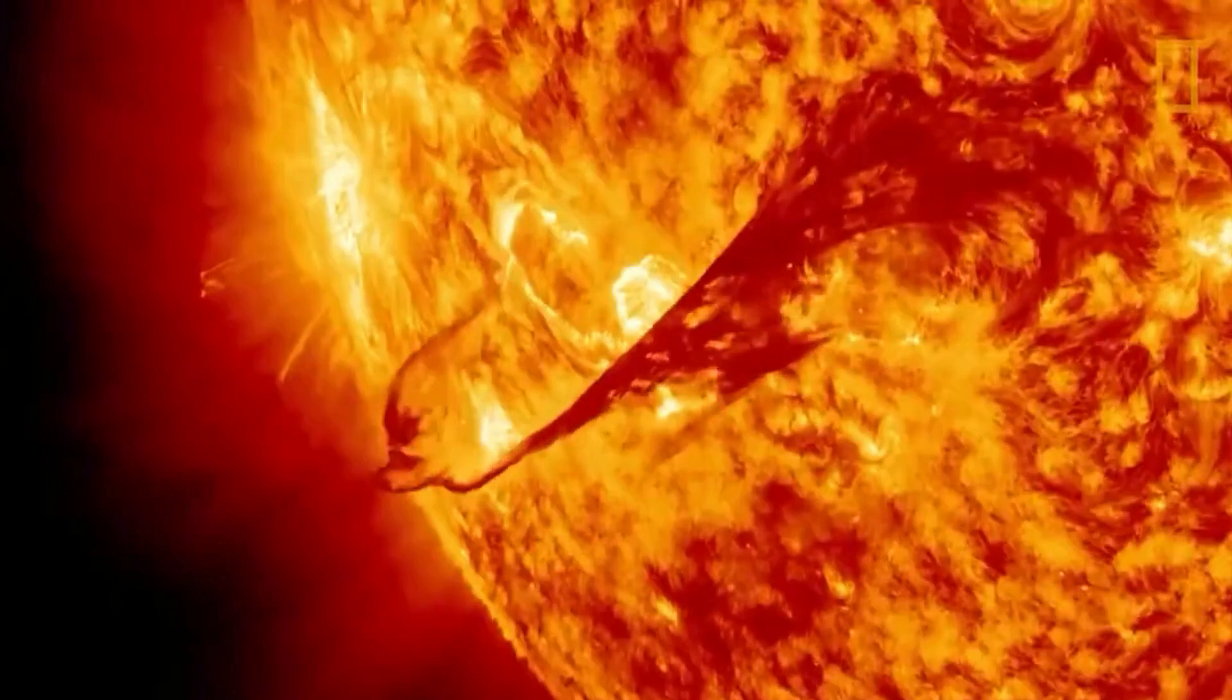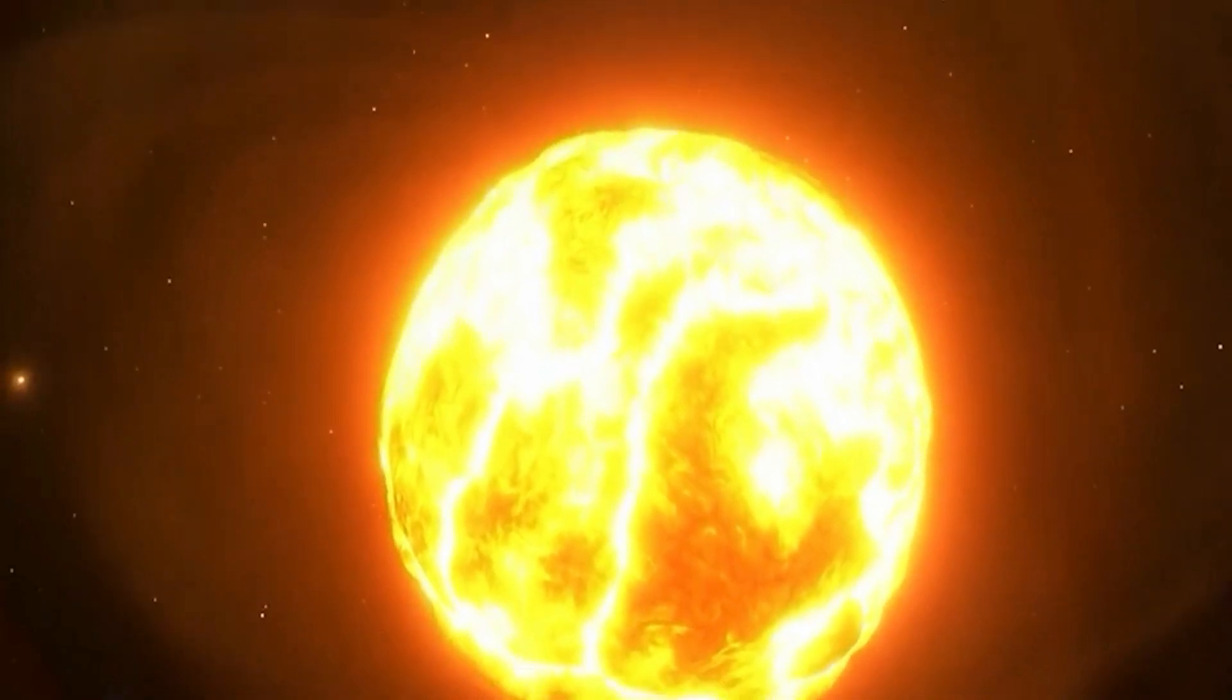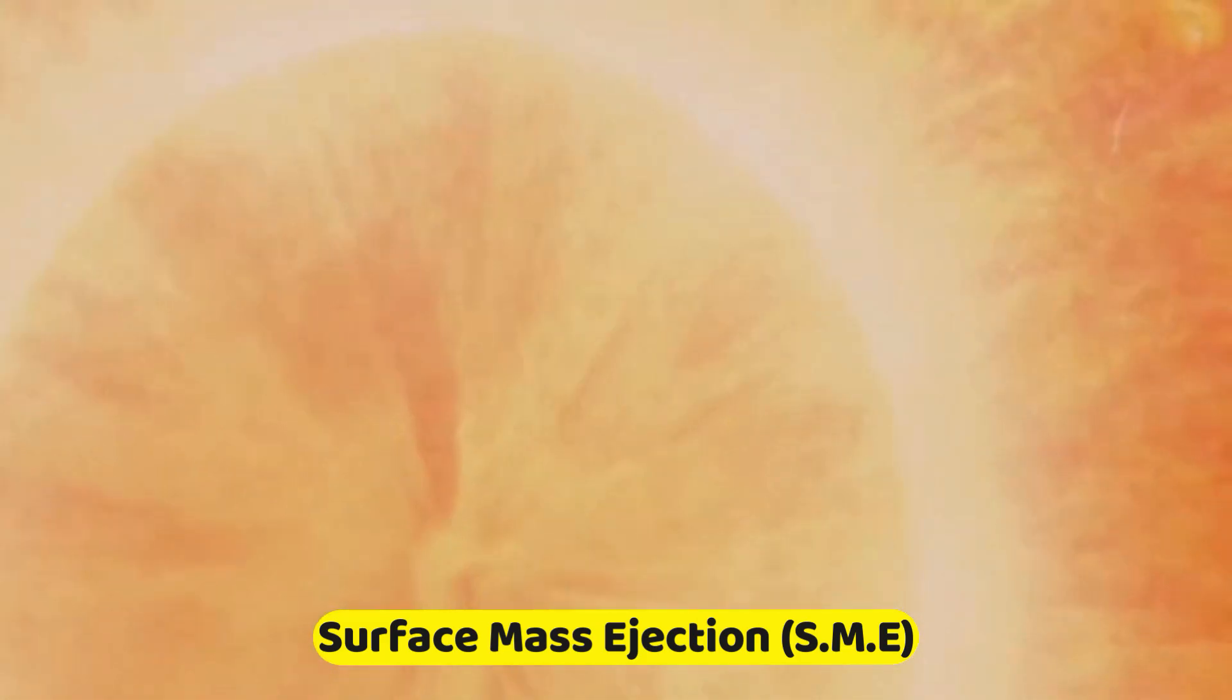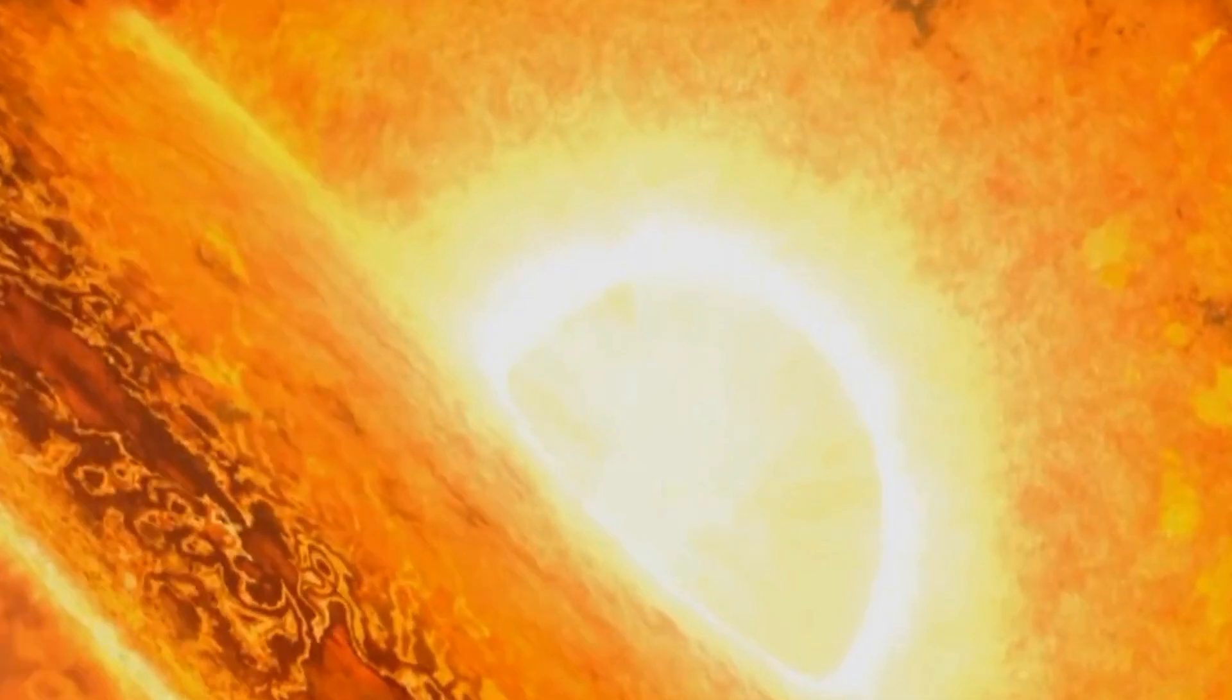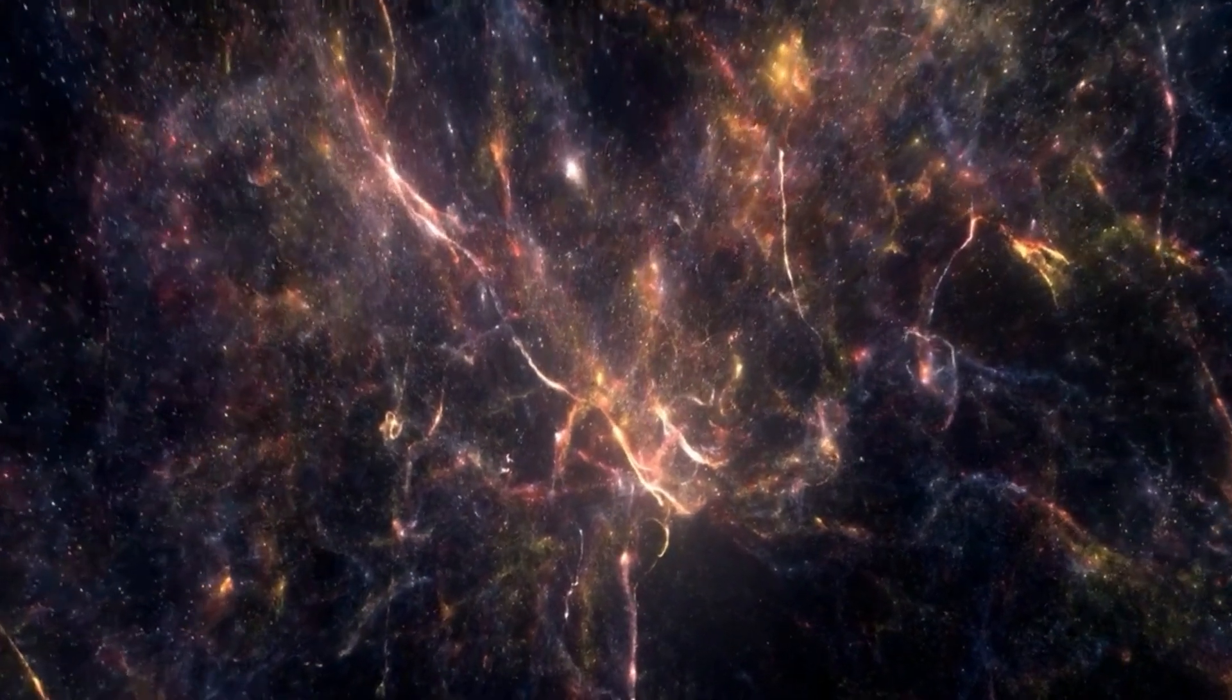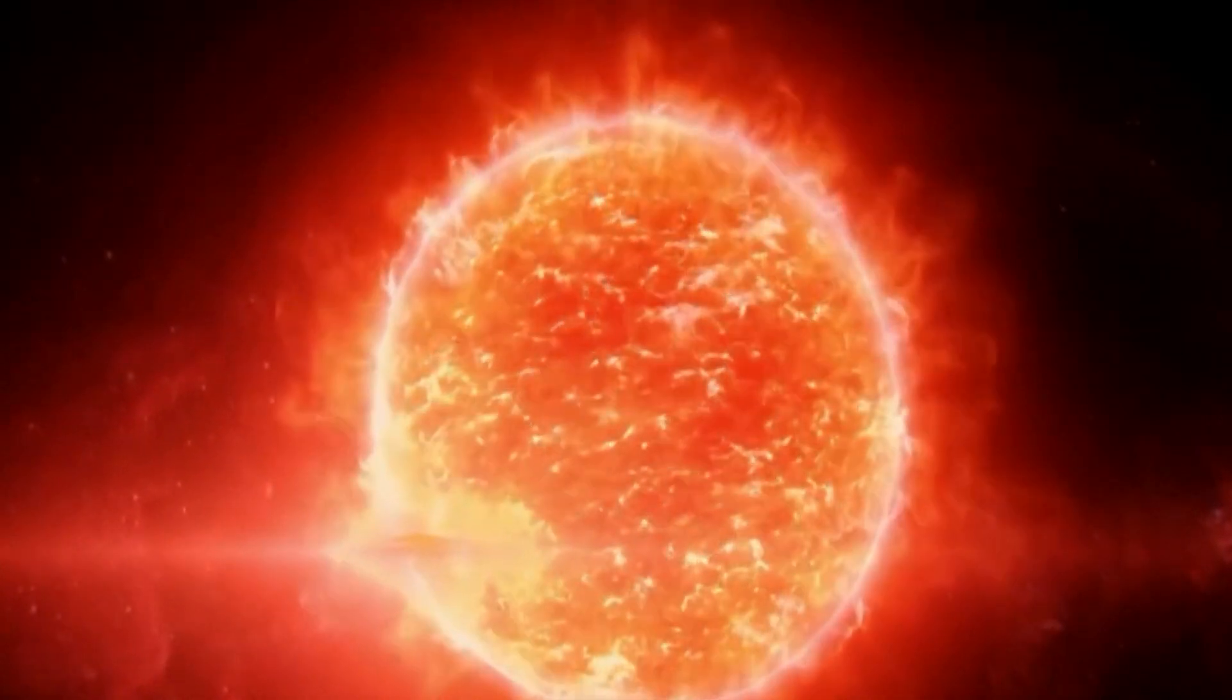This raised a fascinating question. What really happened to Betelgeuse? The evidence available strongly indicates that Betelgeuse experienced an extraordinary and unprecedented event called a surface mass ejection, SME. Think of it as a volcanic eruption on a stellar scale. Material from deep within the star surges upward and outward, creating shock waves within its atmosphere.